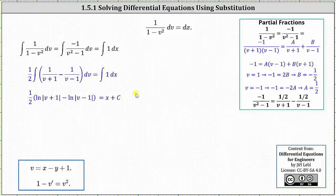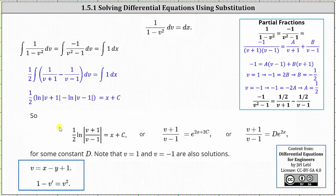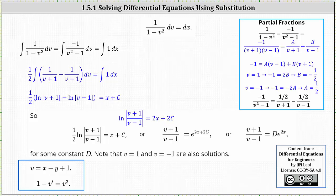Now we work on solving for v. Using log properties, we combine the two logarithms: since we are subtracting, we write the left side as one half times the natural log of the absolute value of the quotient of v plus one over v minus one. Multiplying both sides by two gives natural log of the absolute value of that quotient equals two x plus two c. Writing the log equation as an exponential equation with base e, the equivalent form is e to the power of two x plus two c equals the quotient of v plus one over v minus one.